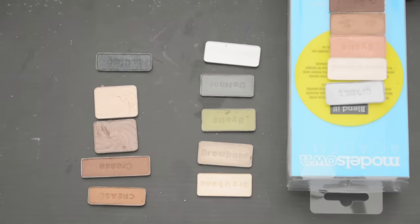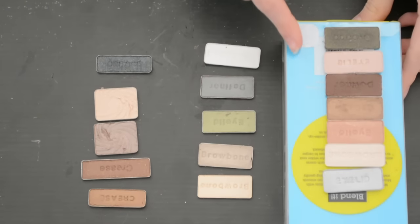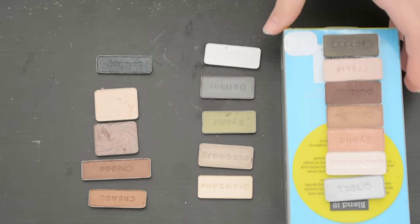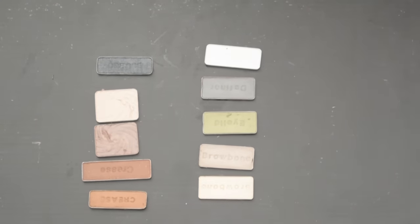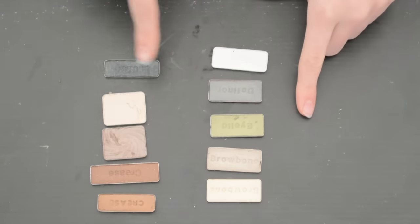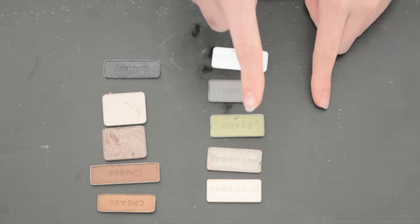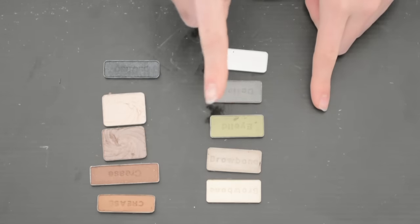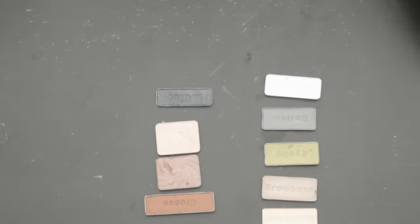Once you've got all the eyeshadows out of their original packaging, this is how it should look like. This row right here on the box is perfect. We're not going to be disturbing those anymore. But here on the left side, those are the eyeshadows that we're going to be using. And the ones on the right side, we're going to be using the pan. We're not going to need the eyeshadow itself.